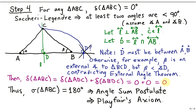This tells us that the angle sum of any triangle is 180 degrees — in other words, the angle sum postulate holds. We have proven that the angle sum postulate implies Playfair's axiom is true. This completes the proof that the existence of rectangles implies Playfair's axiom is true, and also completes the logical equivalency between these two statements.